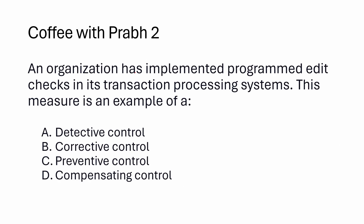Second coffee shot. An organization has implemented a programmed edit check in its transaction processing system. This measure is an example of what type of control? When preparing for CISA, you must be familiar with the three types of controls: detective control, corrective control, and preventive control. The primary objective of preventive control is to prevent the incident — we install it to make sure any incident should not occur.